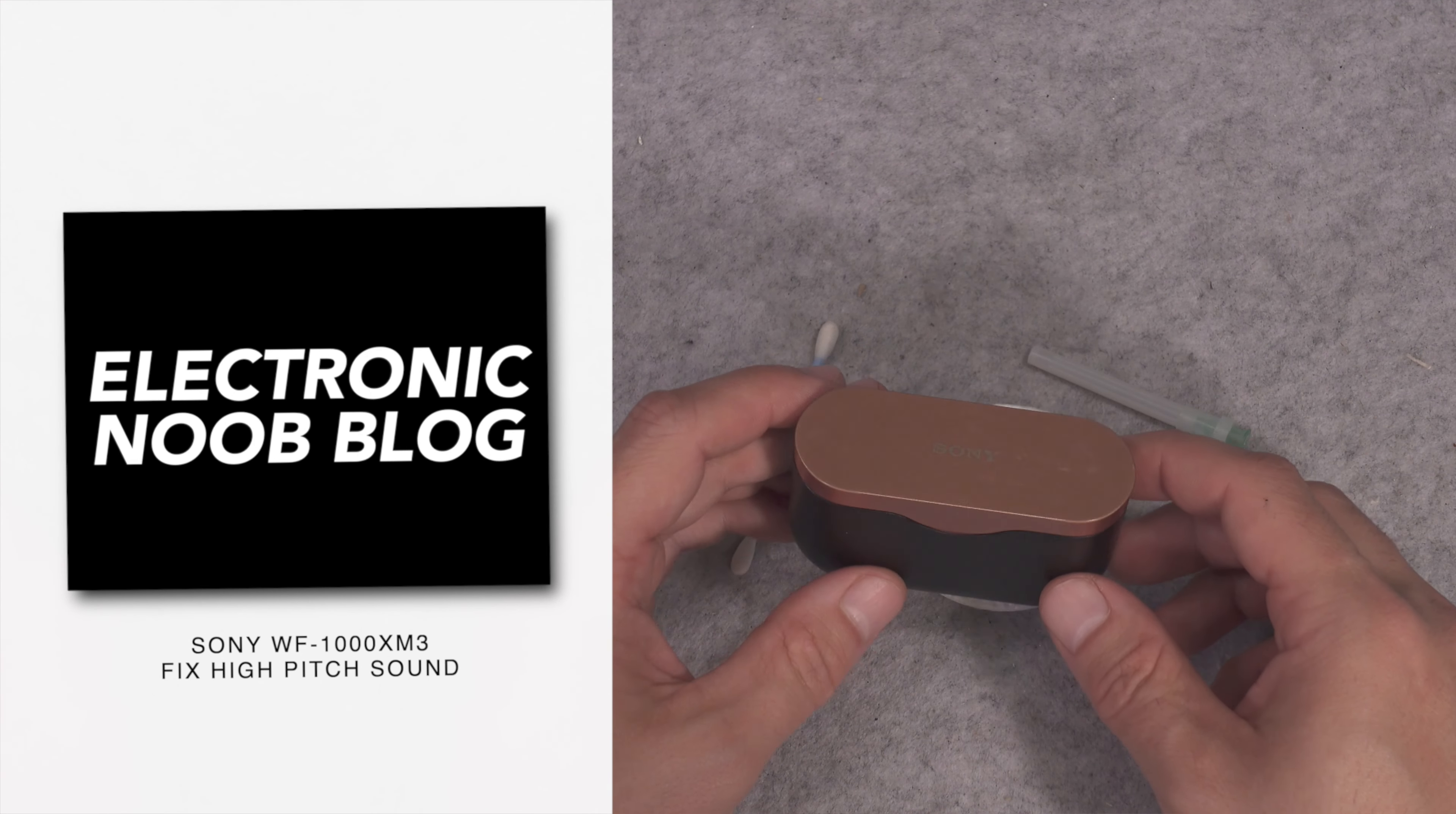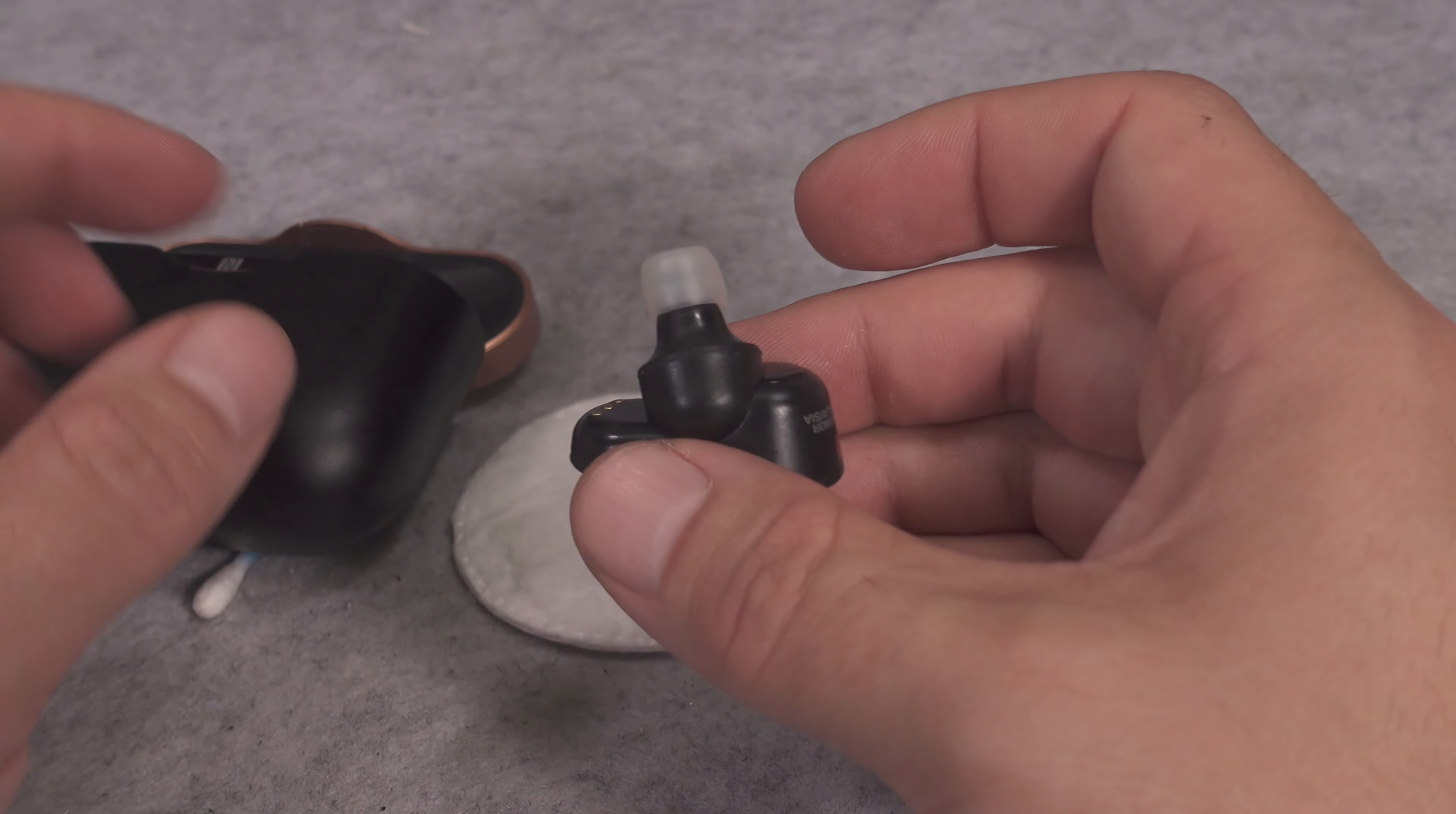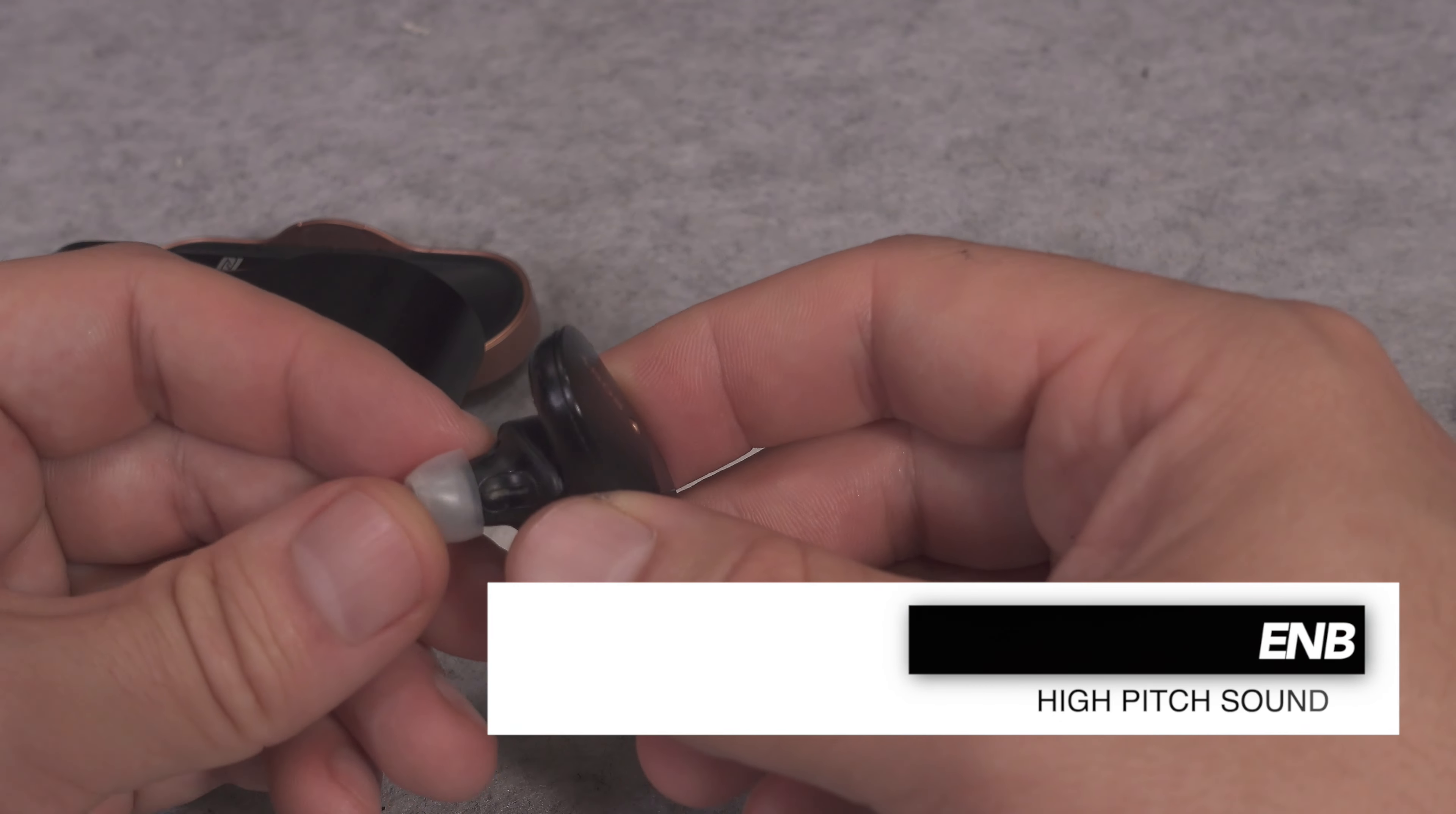Hello, today I would like to present how to fix an extremely annoying high-pitch sound on your Sony wireless headphones. It's happening when you are using noise cancelling and there is a problem with earwax blocking air channels that are required to maintain the internal pressure or to use the internal microphones. I don't know that exactly because I have not pulled them apart.